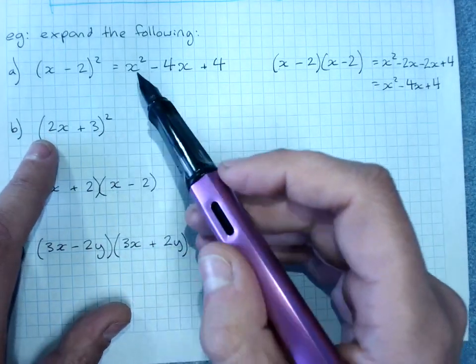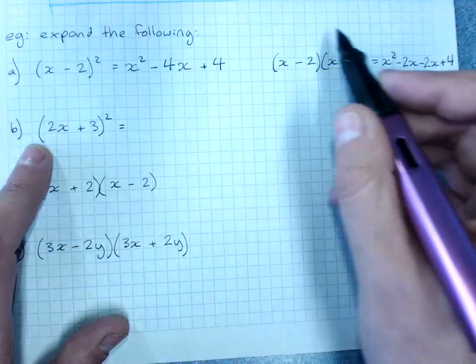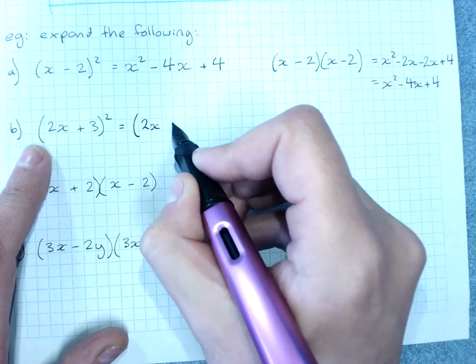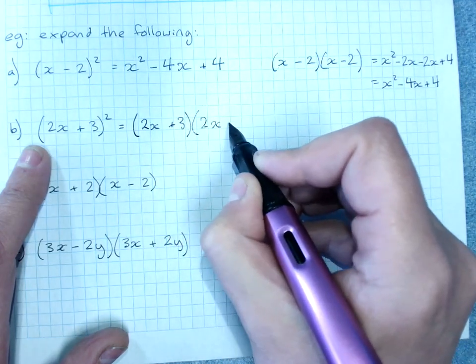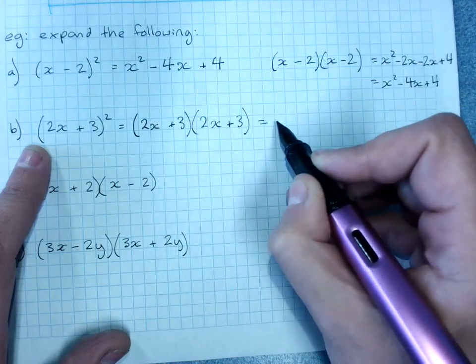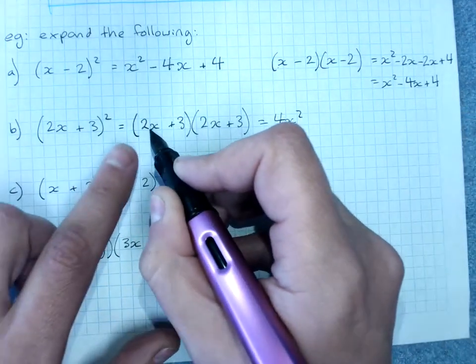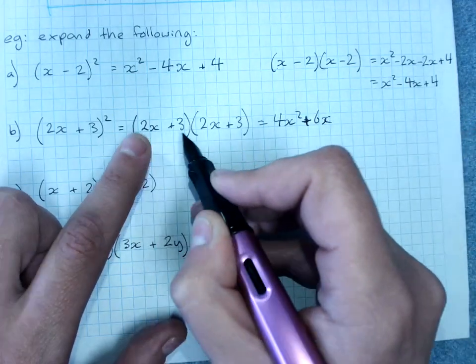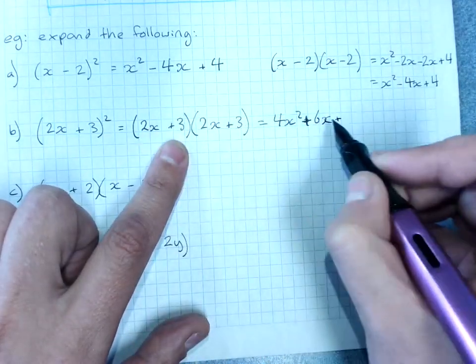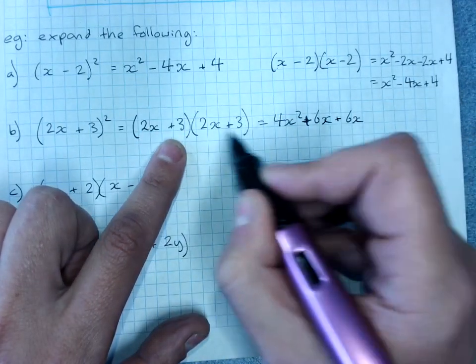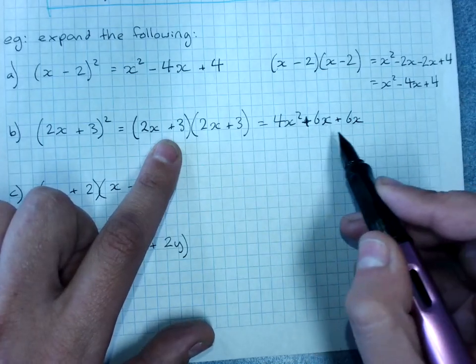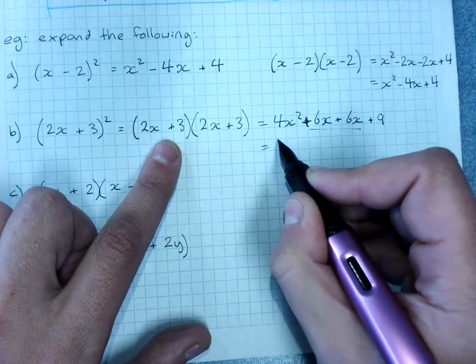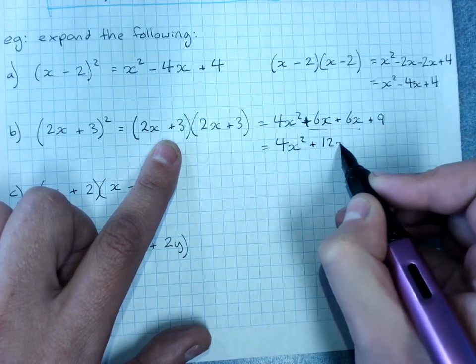So this one, we could expand with two brackets, or we could use the rule. I'll expand this one with two brackets. So two copies of the bracket. 2x times 2x is 4x², 2x times 3 is 6x, plus 6x, 3 times 2x, remember because it's perfect squares these will always be the same, 6x, 3 times 3, be very careful you've just been writing 6 a lot, don't write 6, it's 9. And then gather your like terms, 4x² + 12x + 9.